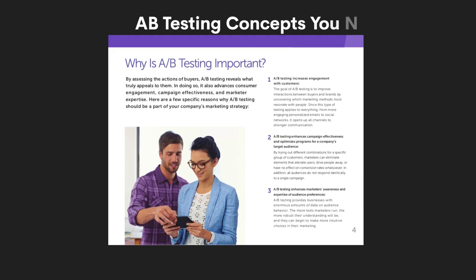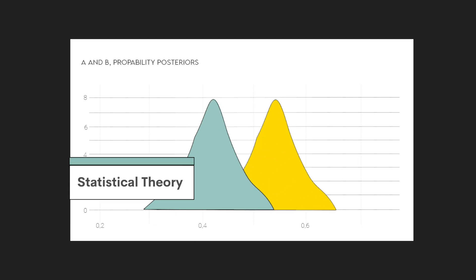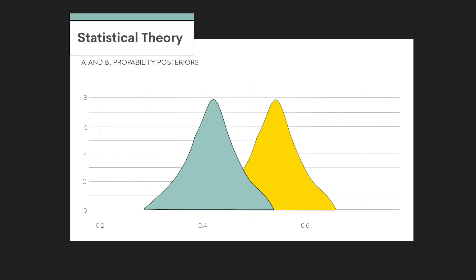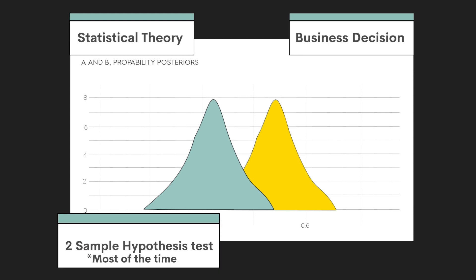Now that you know what an A-B test is and why it's important to business, let's discuss the concepts you'll need to know in a data science interview. Solving an A-B test question requires both a technical understanding of the theory and the math behind it, and an understanding of the business. An A-B test is a type of statistical test — specifically, it's a two-sample hypothesis test most of the time.